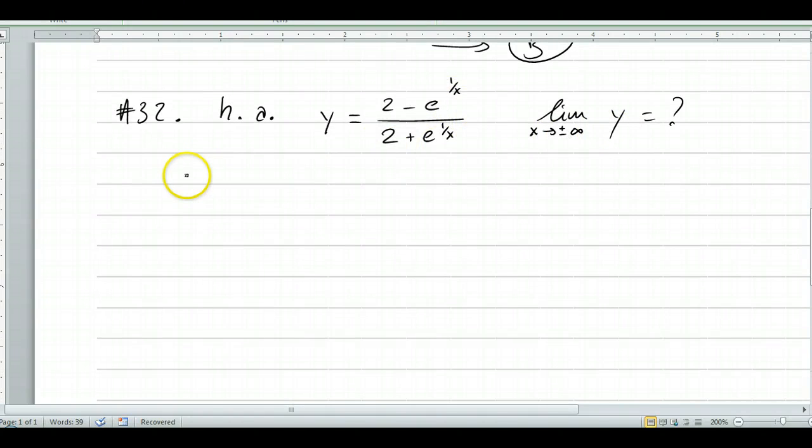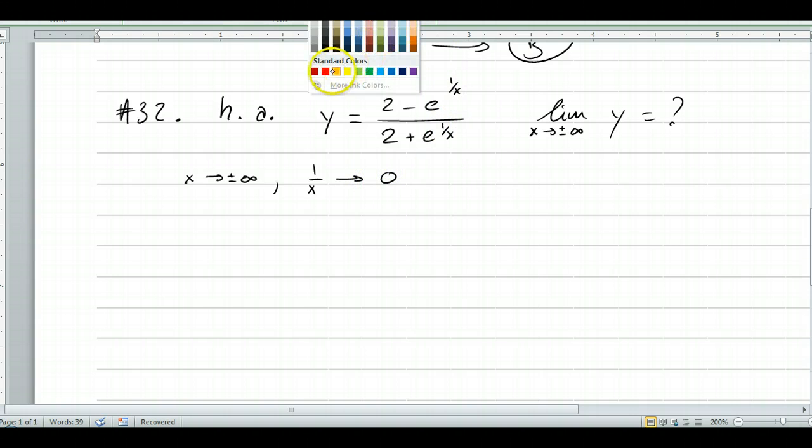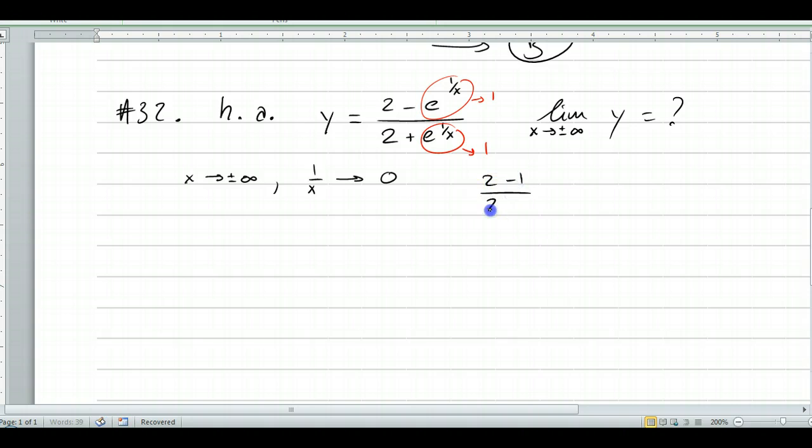Check it out. If x approaches plus or minus infinity, where does 1 over x go, right? If x gets very very large or very very small, 1 over x approaches 0, right? So what do you have at the top? Check it out. So this is 0. So that's e to the 0 which is 1. And this is again e to the 0 which is 1. And so the limit is 2 minus 1 over 2 plus 1, which is 1 third. So I think that the asymptote is y equals 1 third, which is C, right?